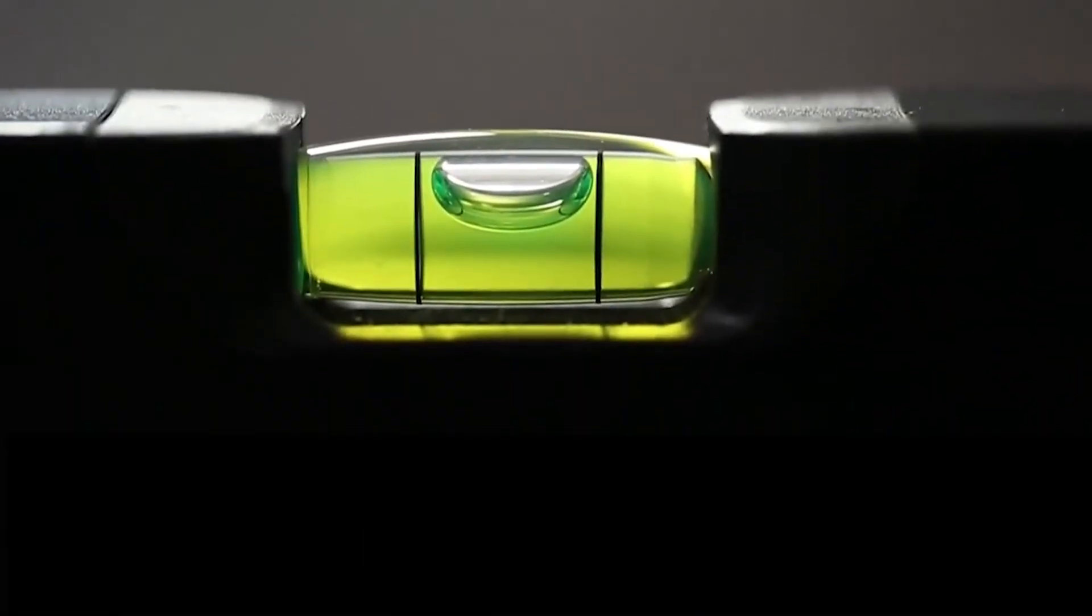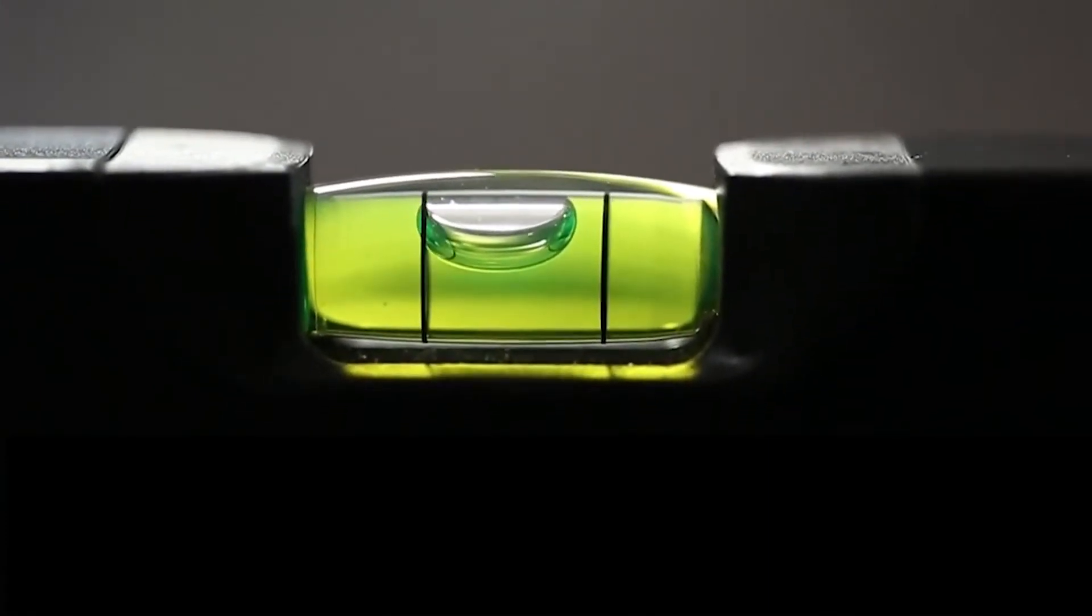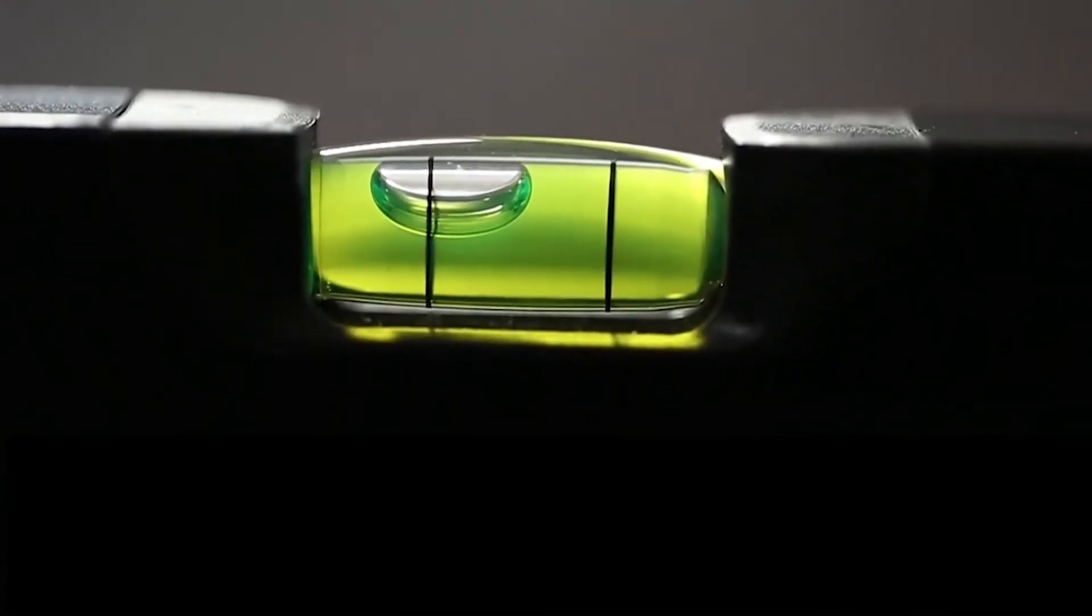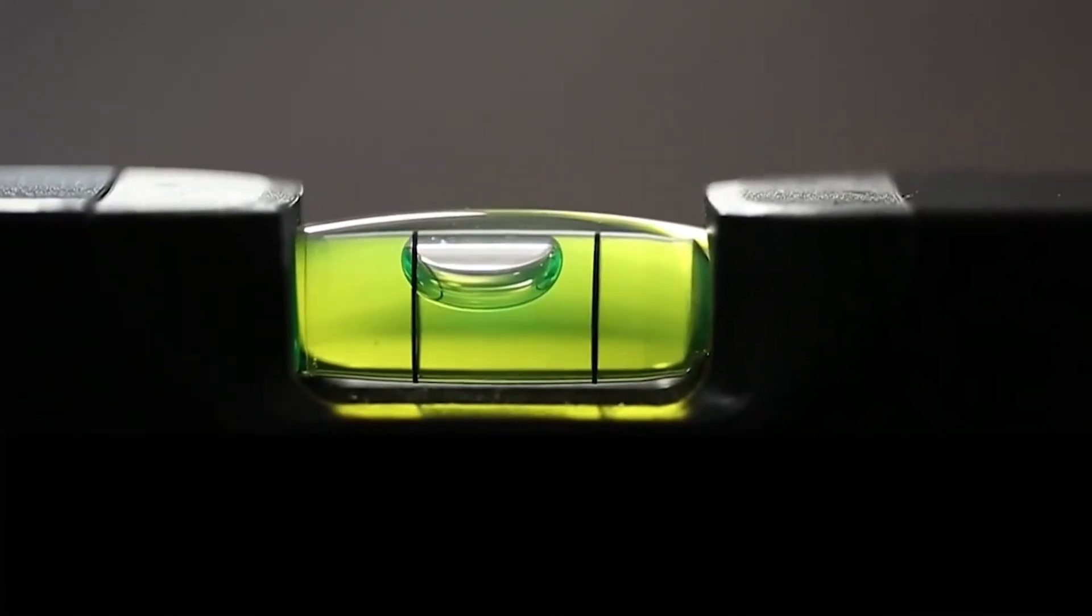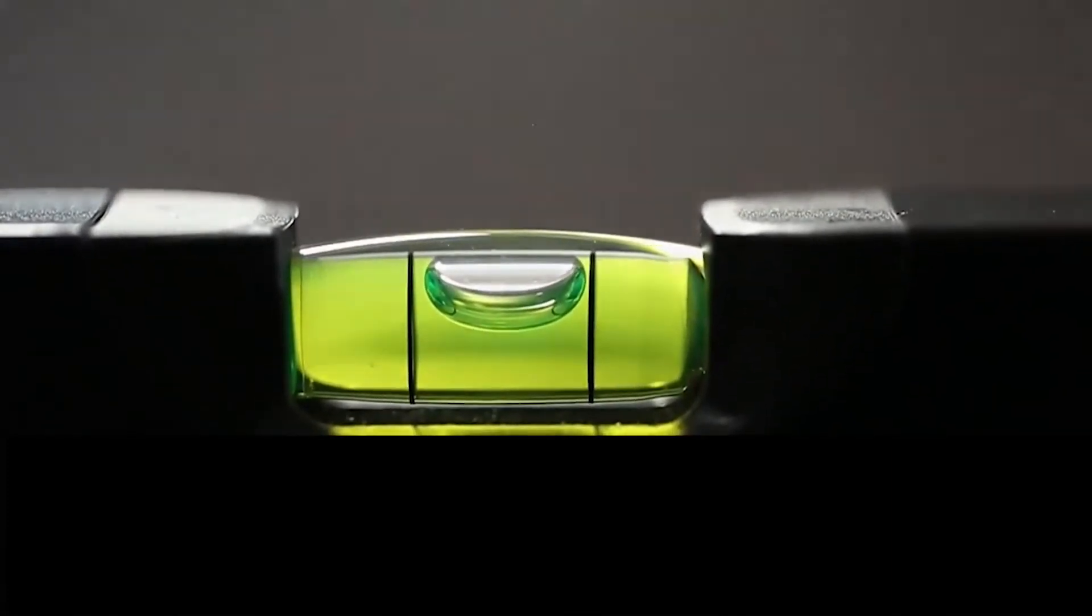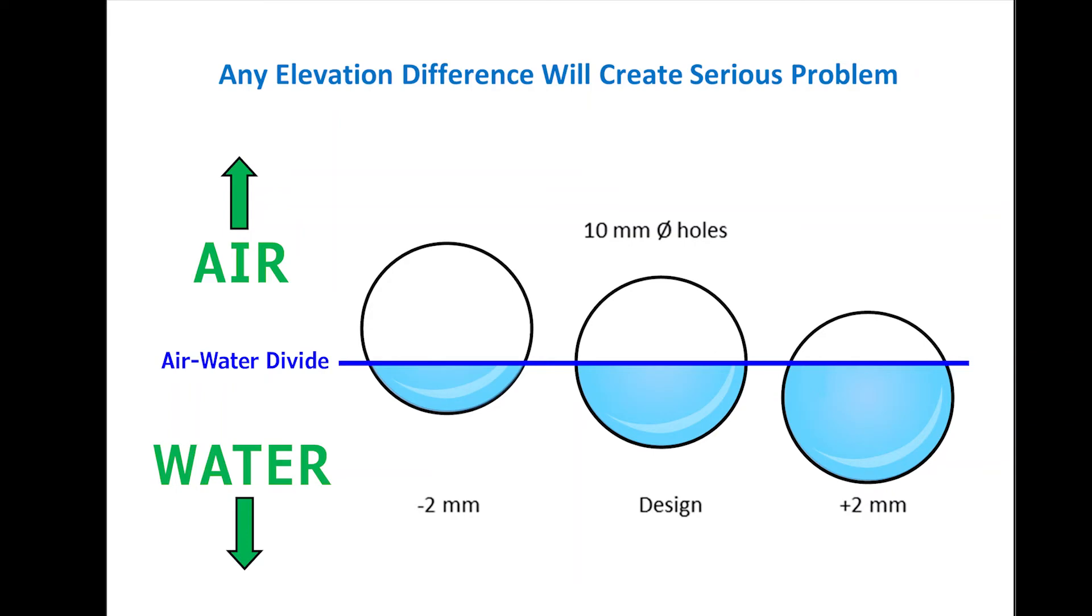Though contractors try their best to have a false floor to be completely level, in reality it's not. Most industry specifications allow plus or minus two millimeters. This graphic shows that a floor elevation variance can undesirably create significantly different airflow rates from nozzle to nozzle.